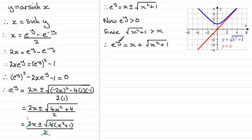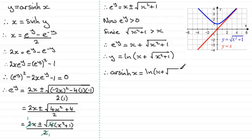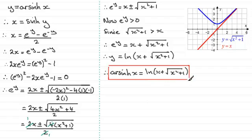Taking the natural log of both sides, y equals the natural log of x plus the square root of x squared plus 1. Since y equals the inverse sinh of x, we've therefore got that the inverse sinh of x equals the natural log of x plus the square root of x squared plus 1. This is something I would encourage you to learn, and we'll be using this in later questions.